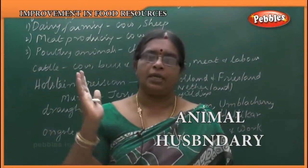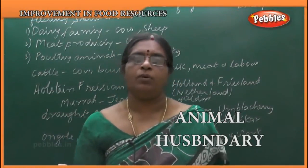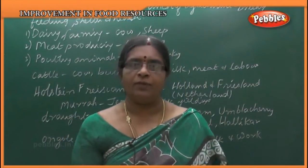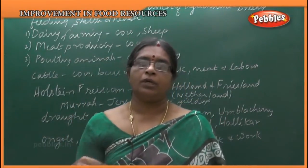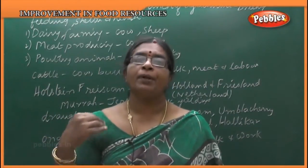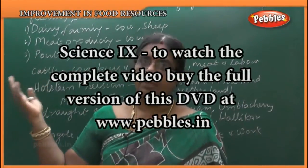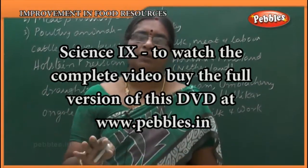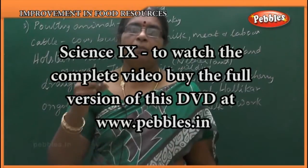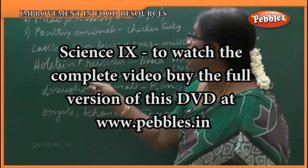So these are the main elements or basic principles for animal husbandry. Animal husbandry is a branch of agriculture which deals with feeding, shelter, breeding and protecting animals from diseases.